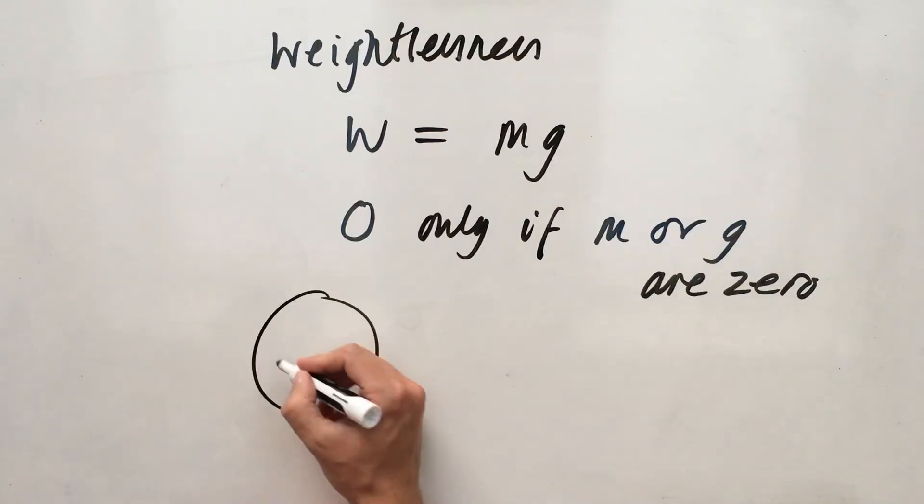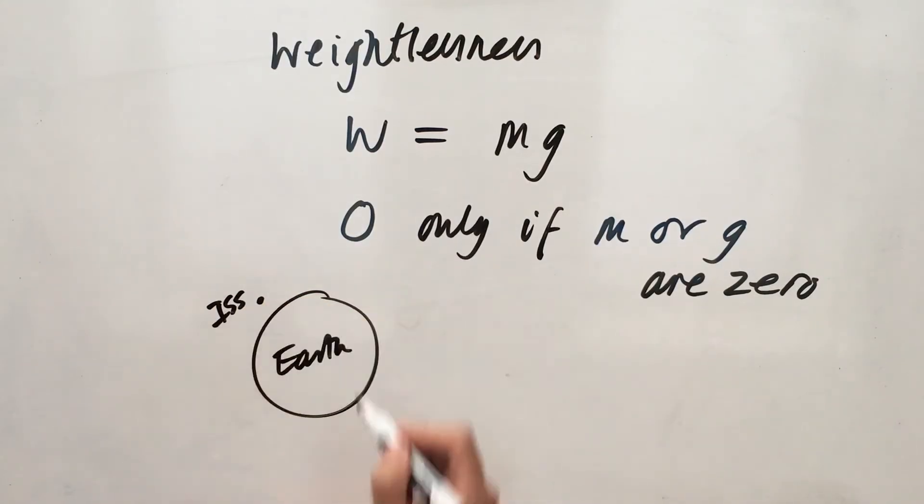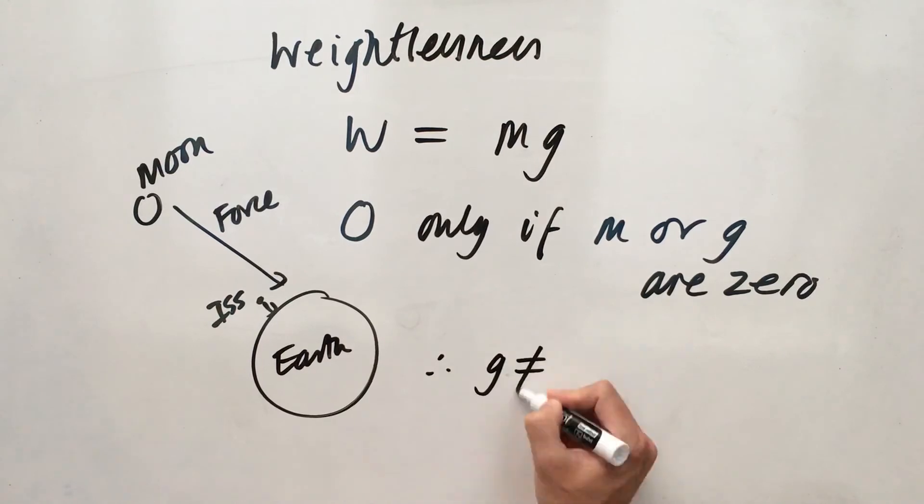Is the gravitational field strength zero? Well, it's not. Otherwise, if you're in the space station, it would just float away. It's pulled down by gravity. The moon's pulled in by gravity. It's the Earth's gravitational field. So the gravitational field strength is not zero outside of the Earth's surface.